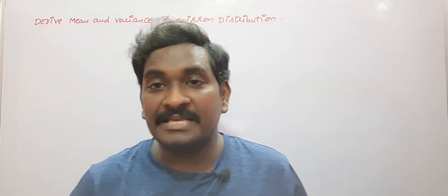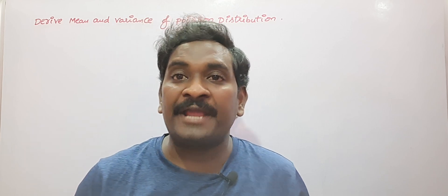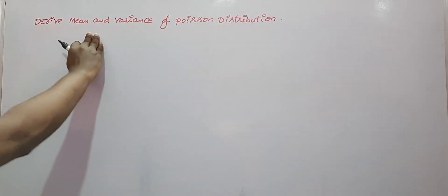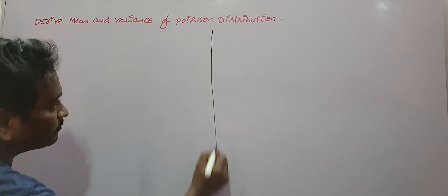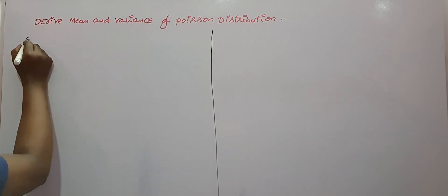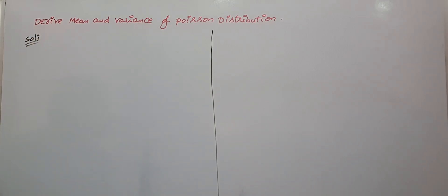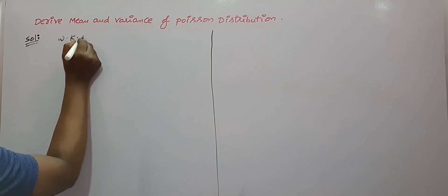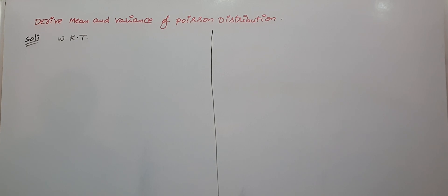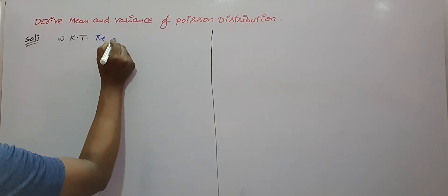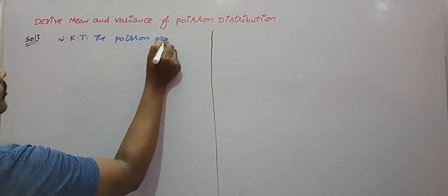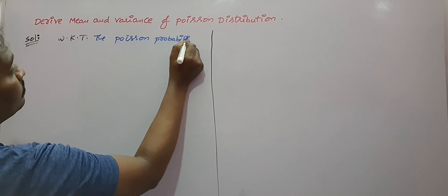Hi everyone, welcome back to our channel. In this video I will explain how to find the mean and variance of a Poisson distribution. We will derive the mean and variance of the Poisson distribution. First of all, we have to write the definition of Poisson distribution of a discrete random variable.